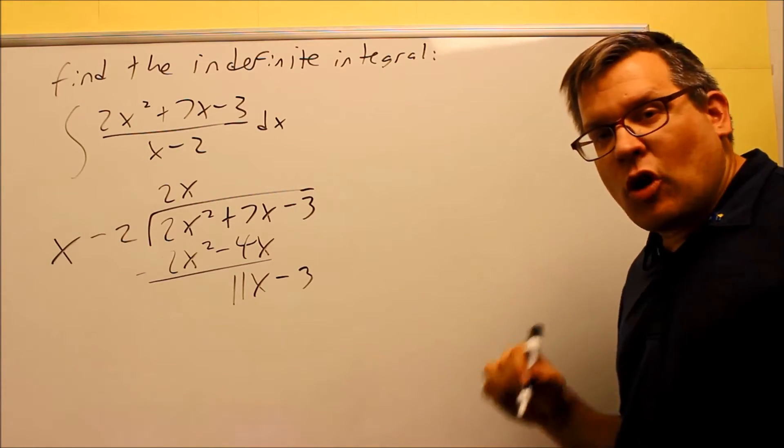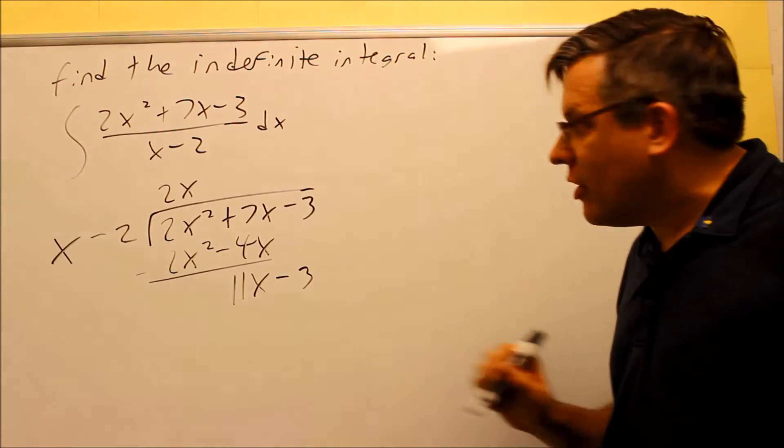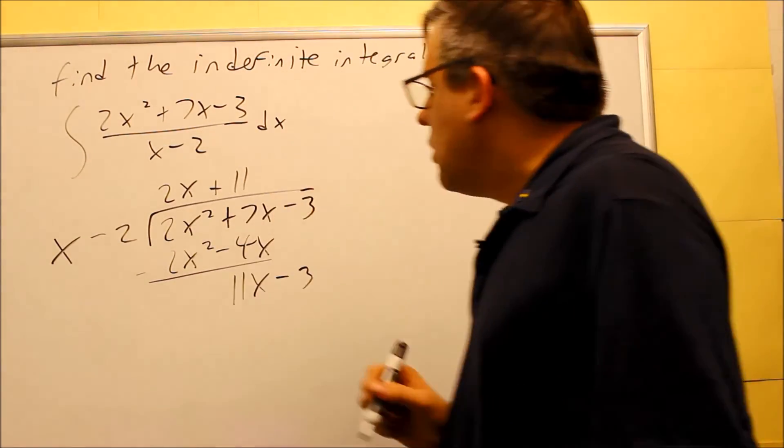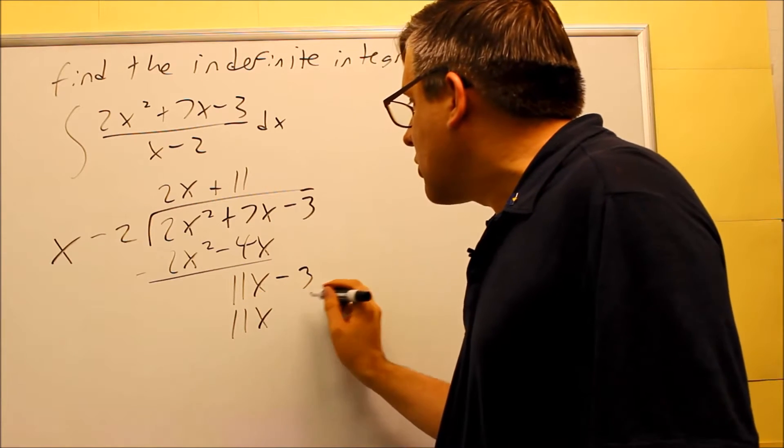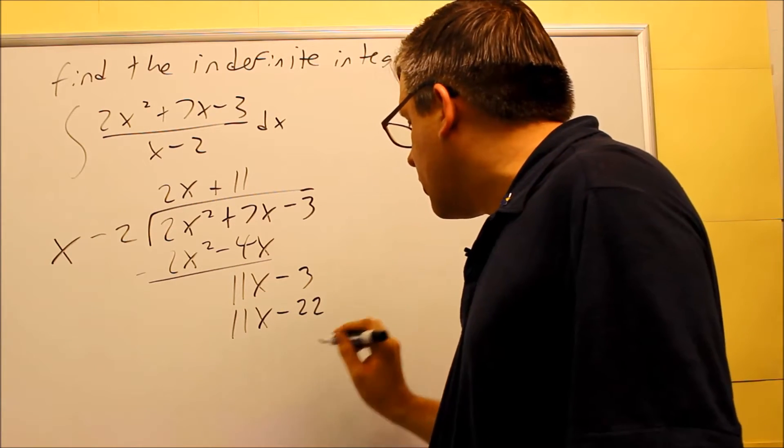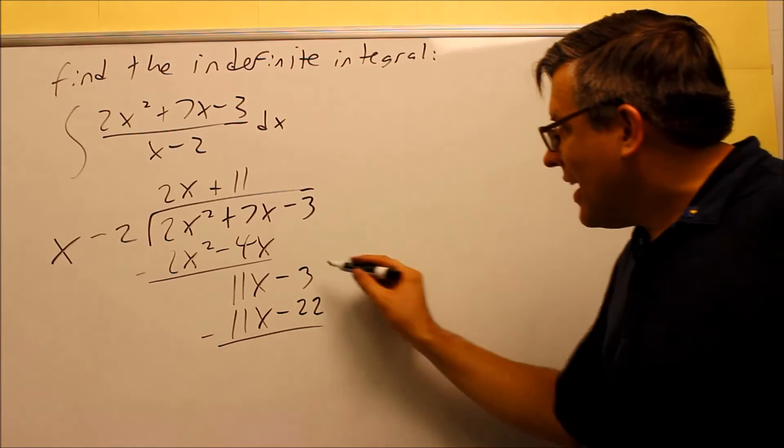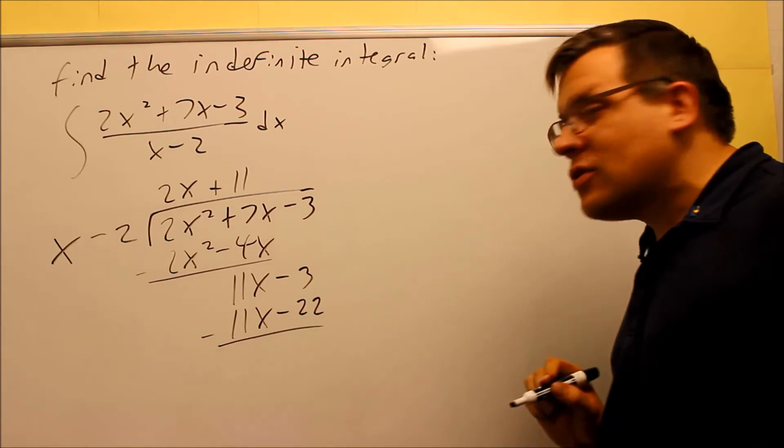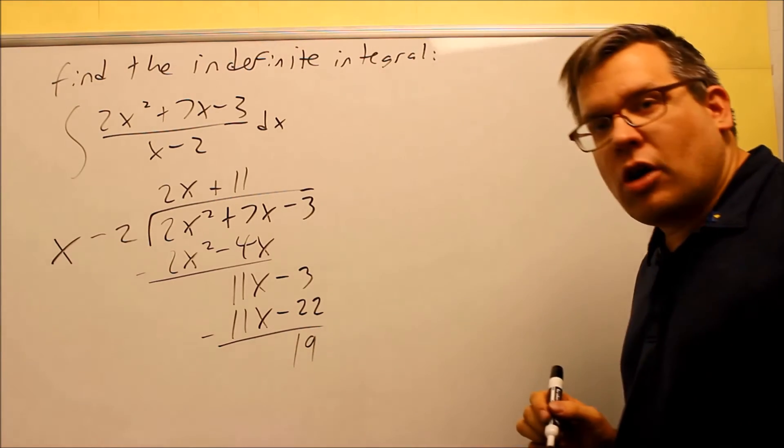Now you repeat the process over. You ask yourself, what do I have to multiply x by in order to get 11x, and that's going to be plus 11. Multiply that by both things on the outside, 11x, and you get minus 22. Once again, be really careful with your subtraction. Negative 3 minus a negative means you're going to do negative 3 plus 22, which means you're going to get a remainder of 19.